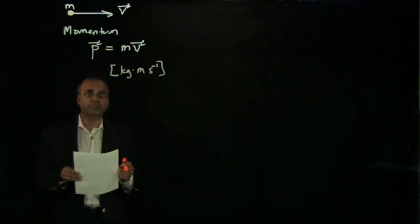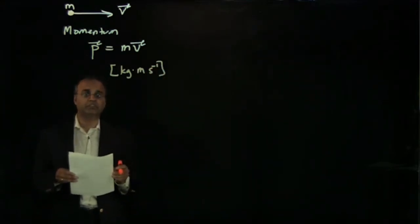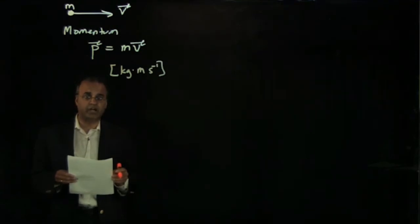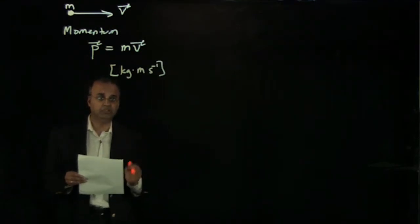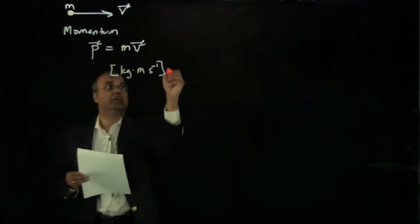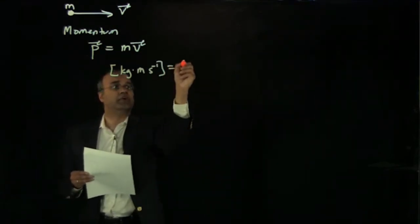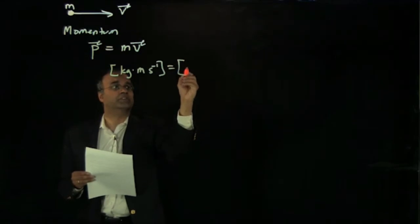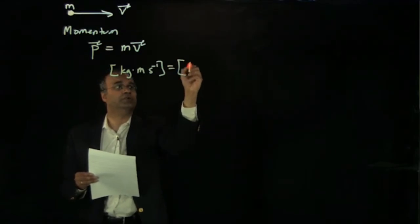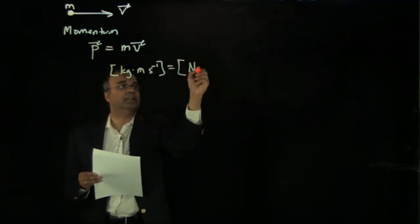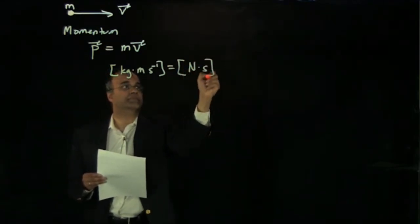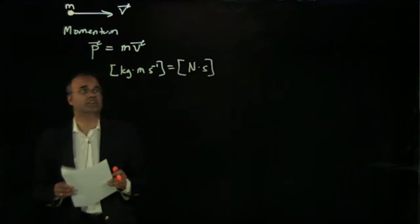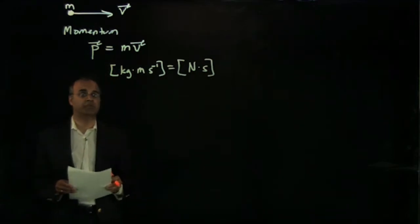You can also express momentum dimensionally as the product of a force times time. In SI units, the units of force are the Newton, and the units of time are the second. So these are the SI units for momentum — two different ways of writing the same dimensions.